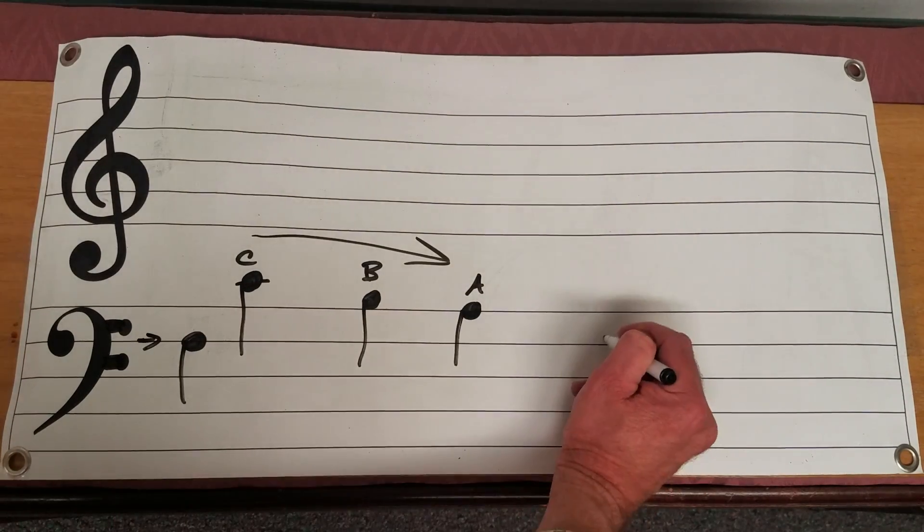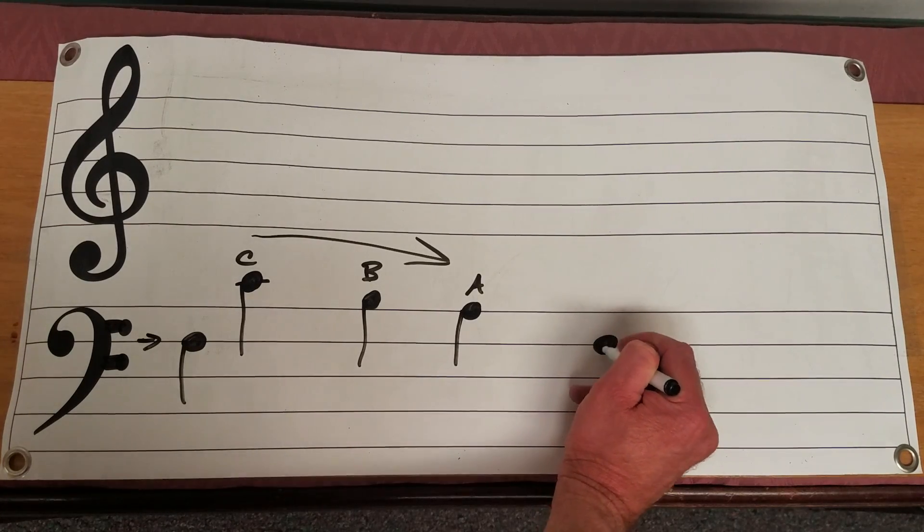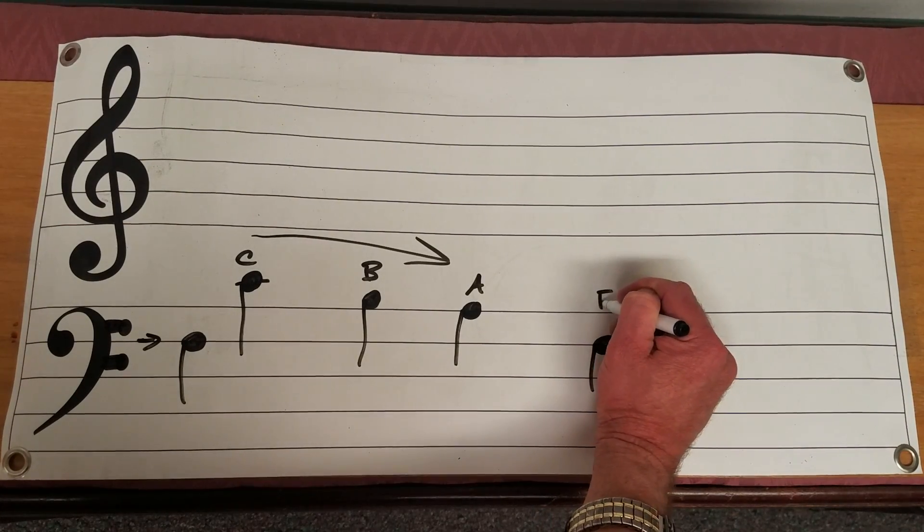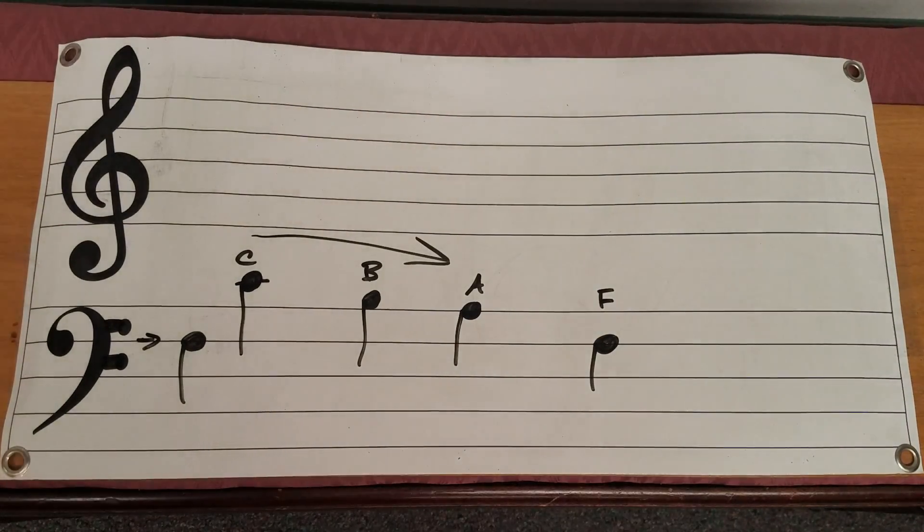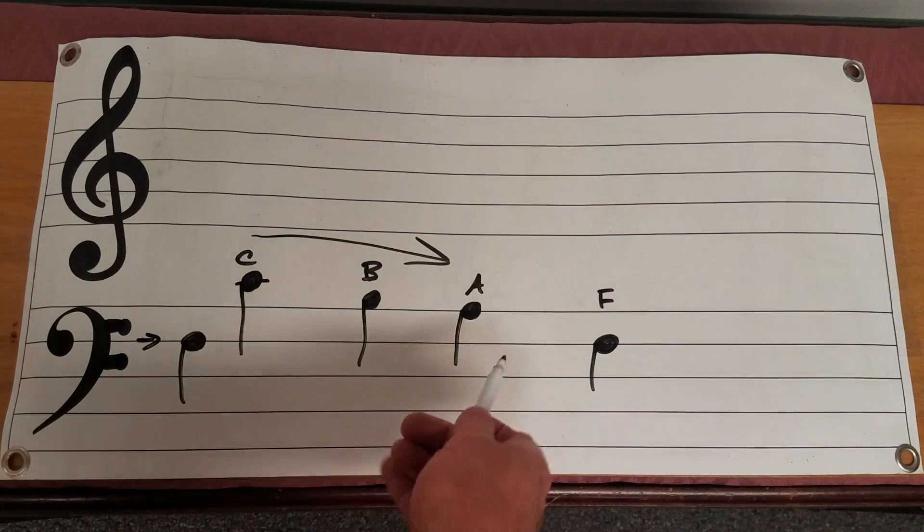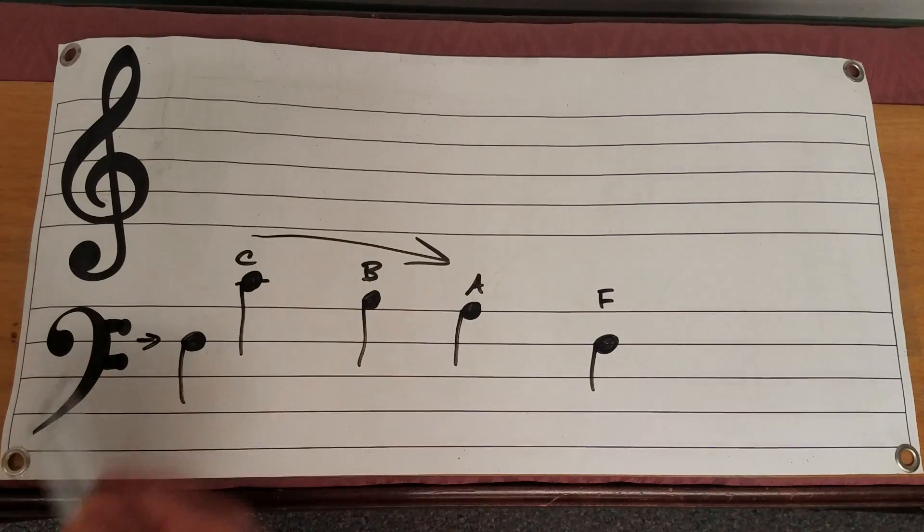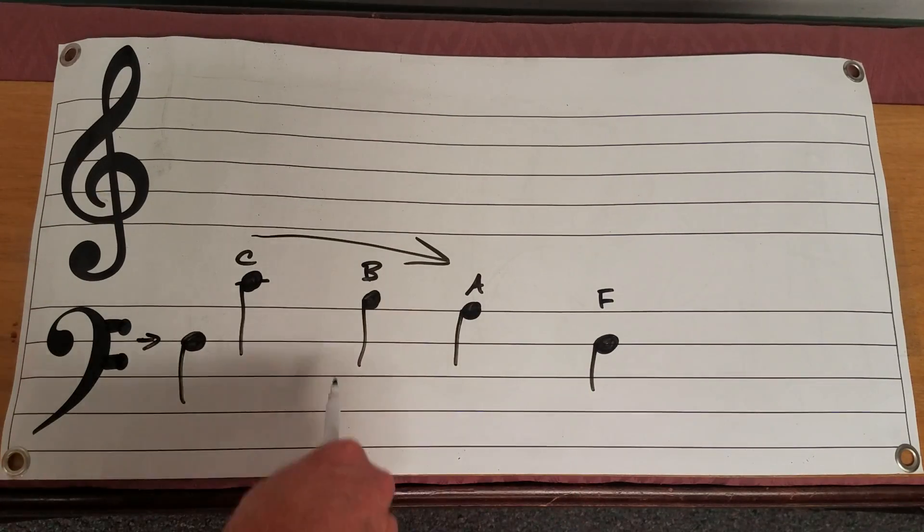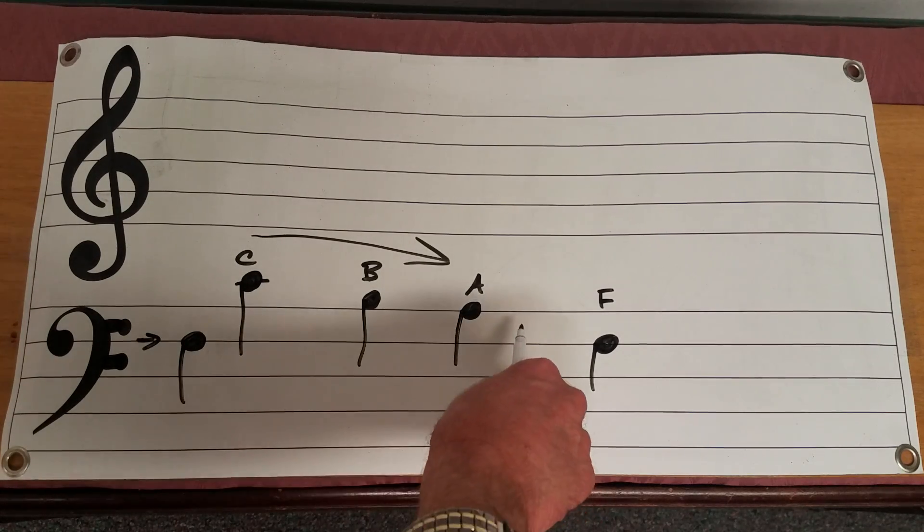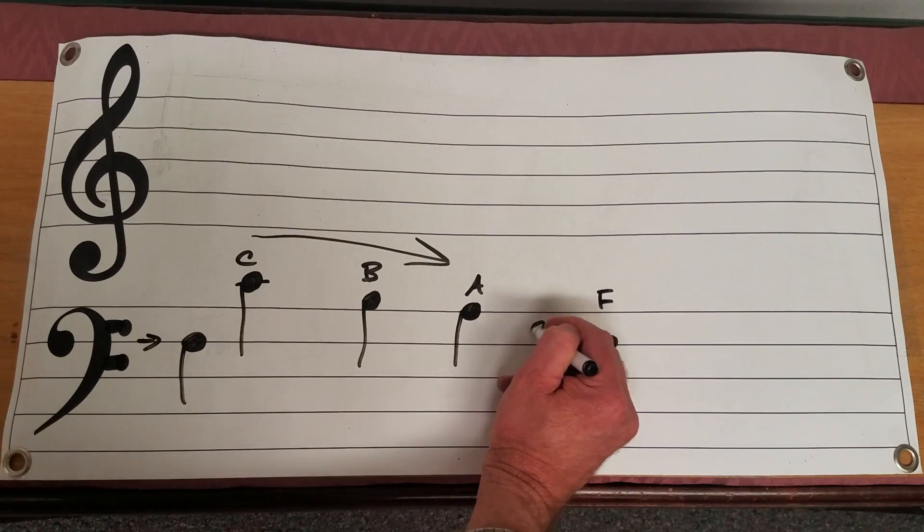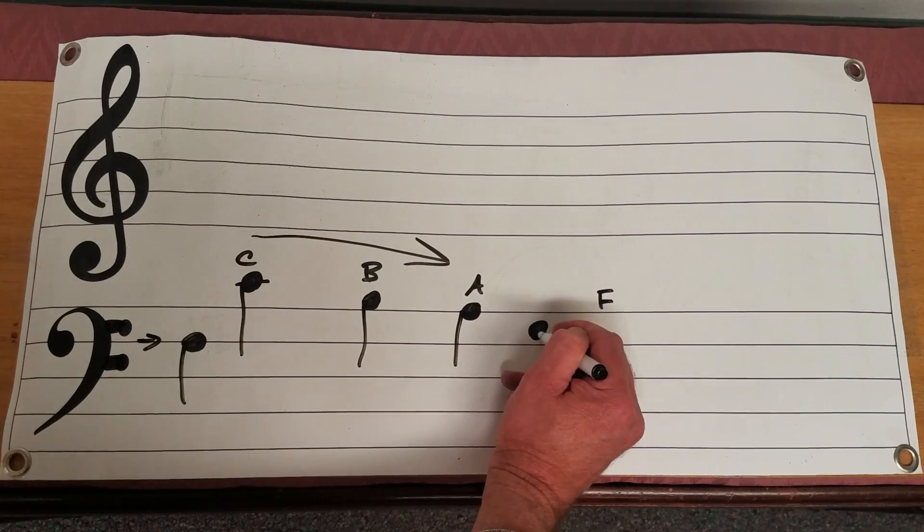And then if you'll see down here we have F. I'm going to write it over here just for the purposes of demonstrating something else. Now you may say, well wait, looks like there should be a note in between. Sure enough because remember notes can go either on the line or in the space. And sure enough there is a note right here.